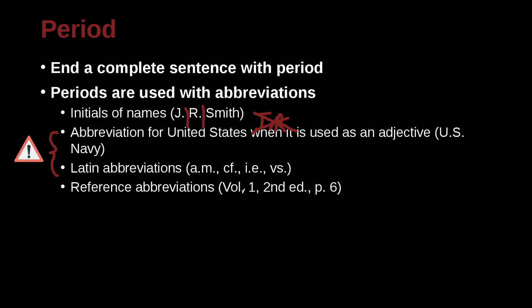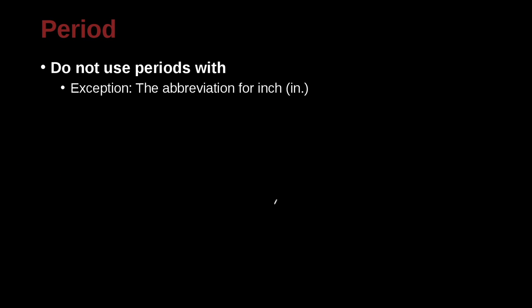If we look at reference abbreviations, for example, volume numbers. So volume, period, and then a space, one. And then here we have edition. And edition, ed., has a period, and it should have a space. But because we're using a comma, and commas do not have spaces before them, so that goes up right against the period. And then you have a space after the comma.